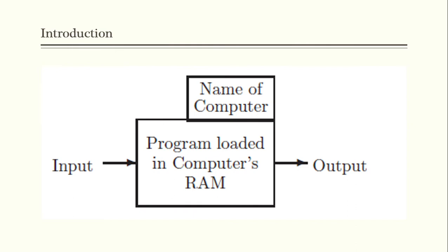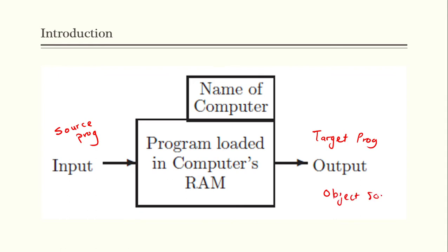This is the structure of the compiler. A compiler has an input as well as output, just like a normal program. We have a processing part between input and output. The input is normally called the source program, and the output is called the target program. The output from the compiler — the target program — is called object code, and the input is called source code.